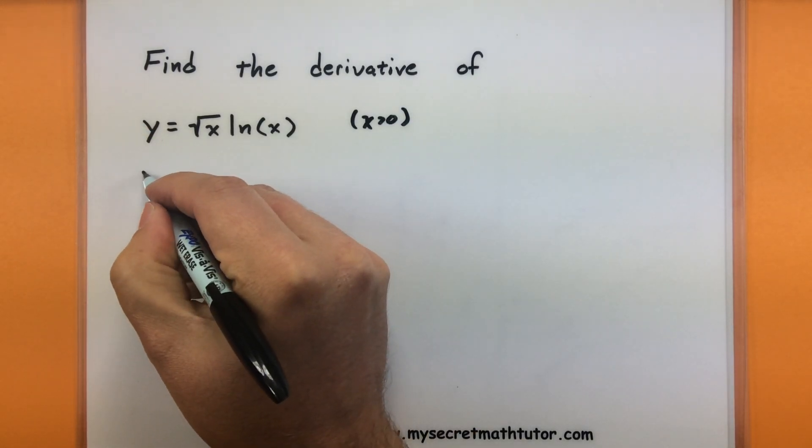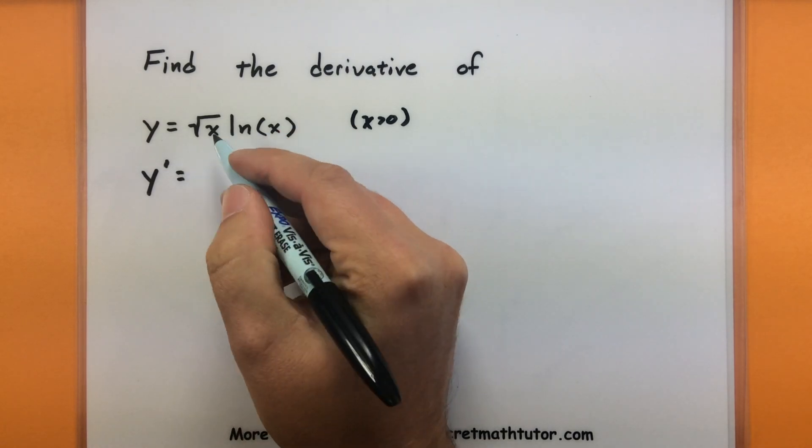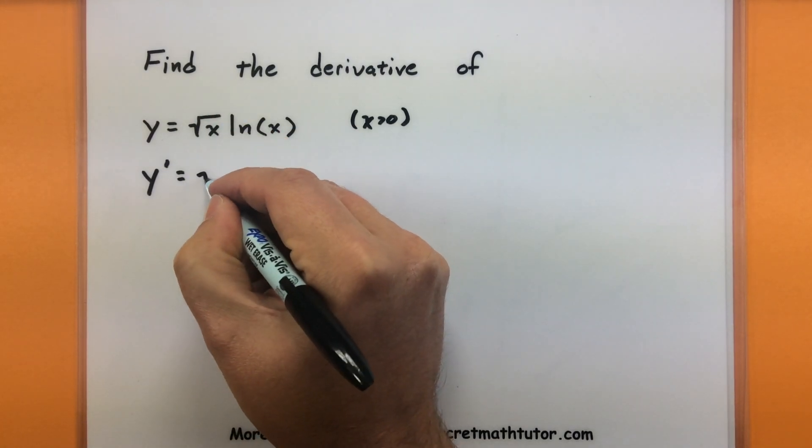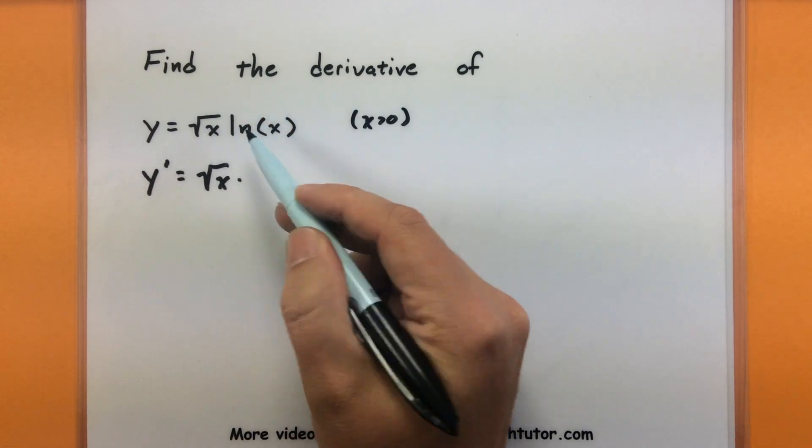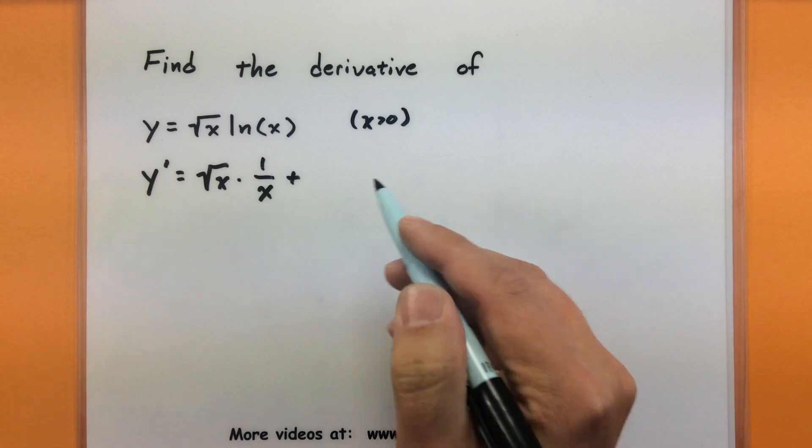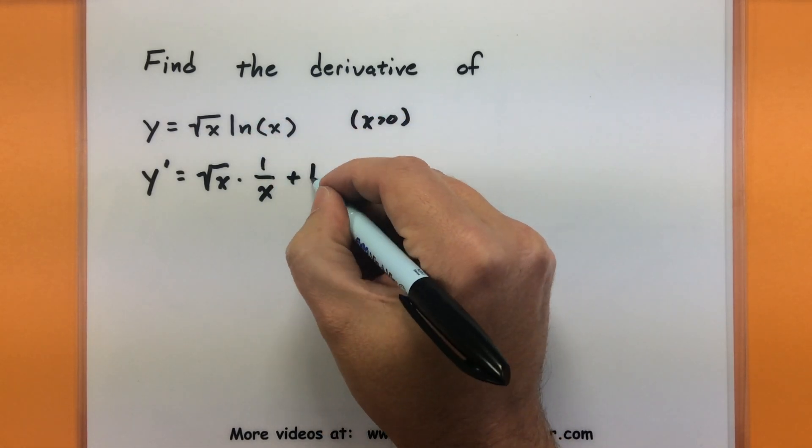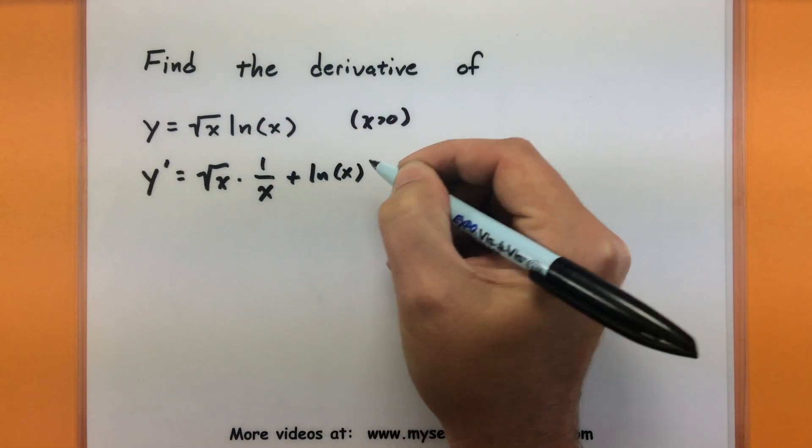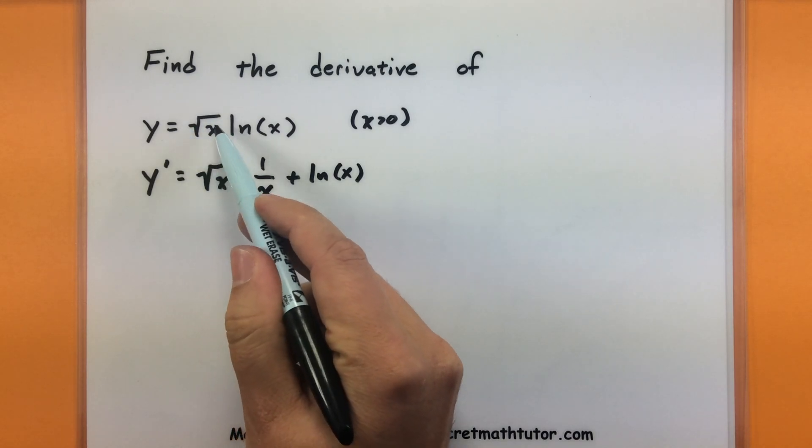For our product rule, we'll begin by saying we need to have the first function, just as it is, multiplied by the derivative of the second, there's that 1 over x, plus the second function, just as it is, multiplied by the derivative of the first.